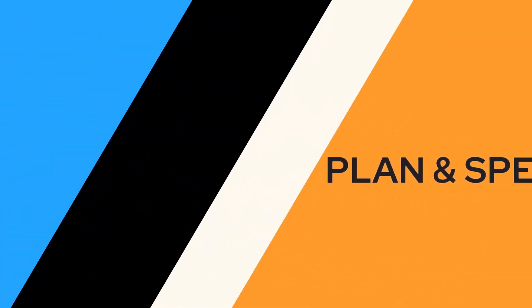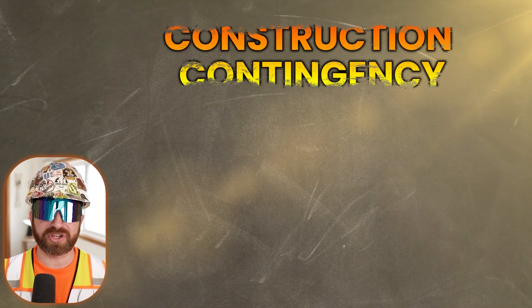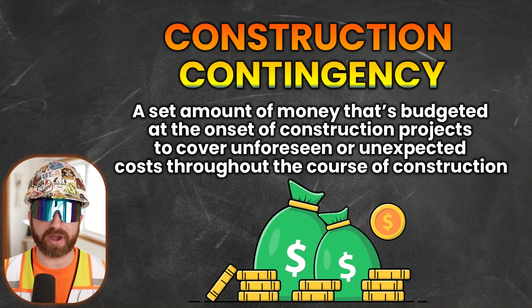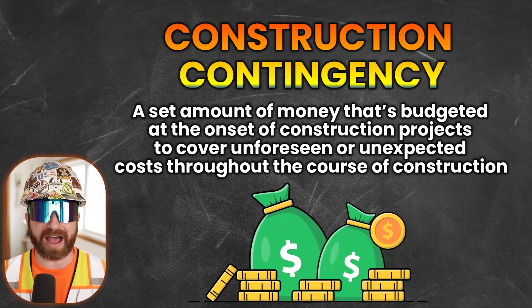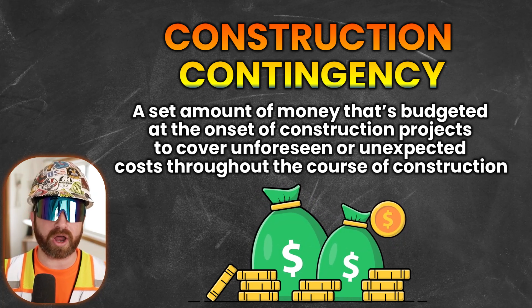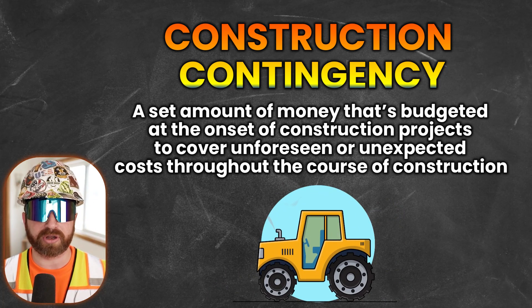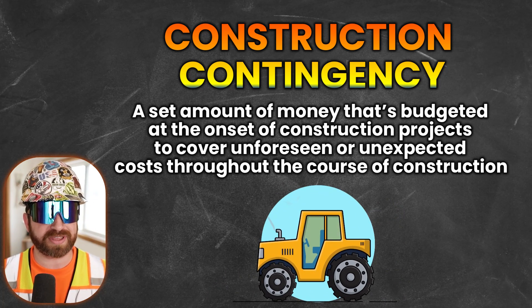In today's video, I'm going to be talking about construction contingency. We'll talk about the different types of contingency and why construction contingencies are necessary. A construction contingency is a set amount of money that is budgeted at the onset of a construction project to cover unforeseen or unexpected costs throughout the course of construction — but there's much more to it than just that.